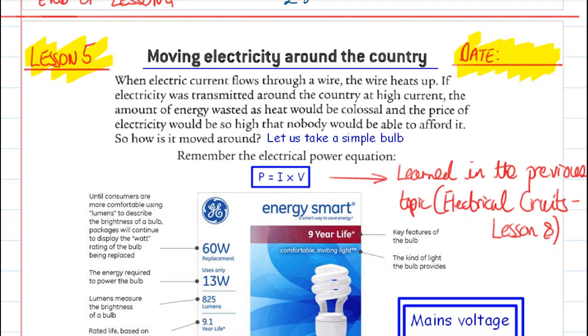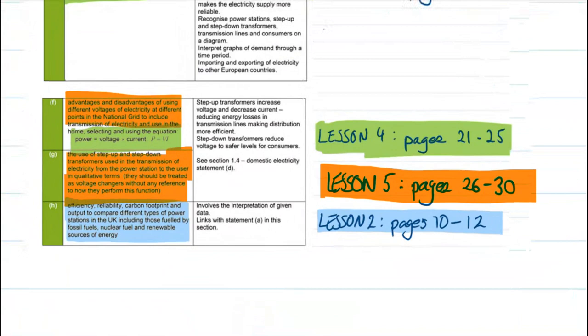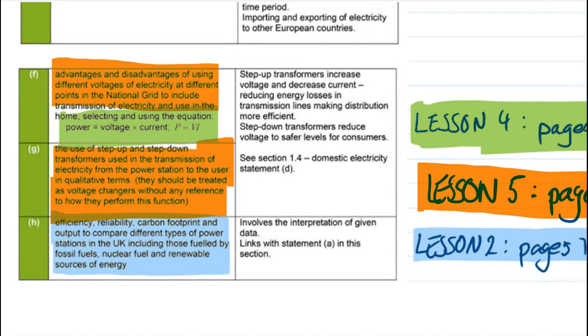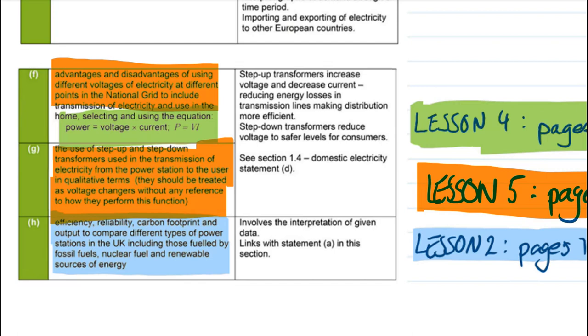And then let's look to see what it is we're learning. We're completing pages twenty-six to thirty. There's two main parts. Firstly, advantages and disadvantages of using different voltages of electricity at different points in the national grid. And the use of step-up and step-down transformers using the transmission of electricity from the power station.